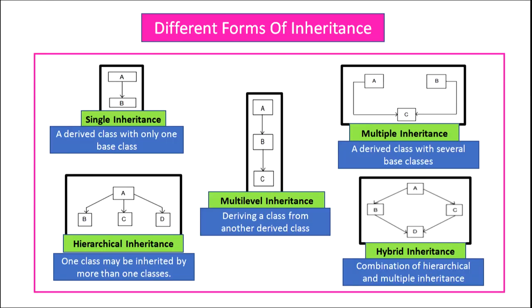There are five different forms of inheritance. The first one is single inheritance. In single inheritance, a derived class is derived from only one base class. You can see in the figure, A is the base class and B is the derived class which is derived from A.